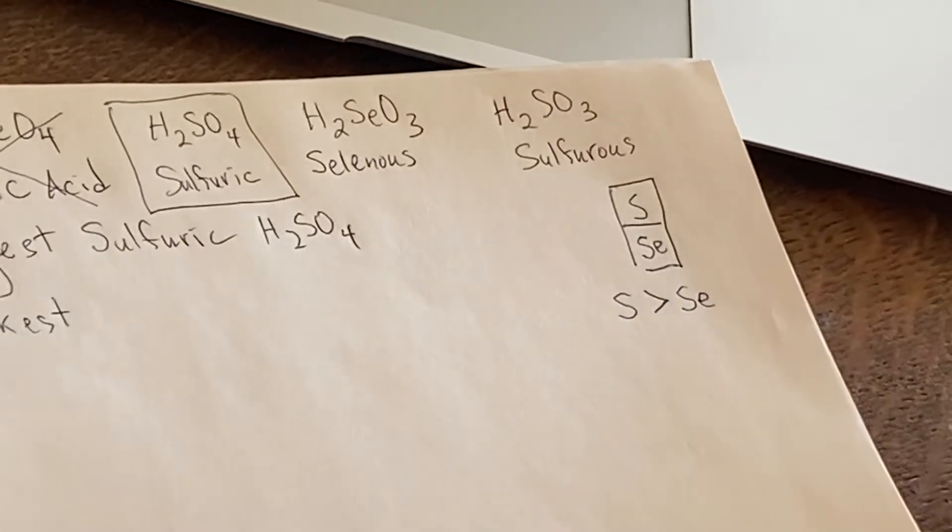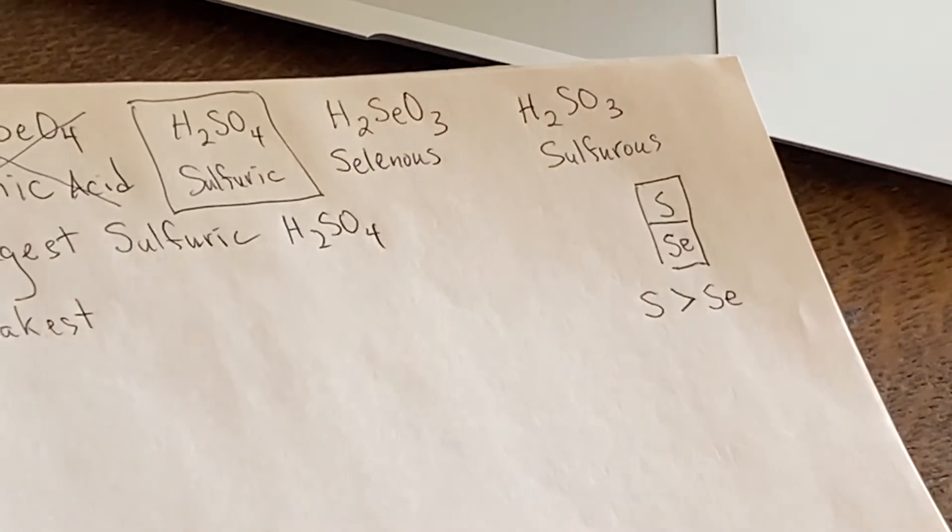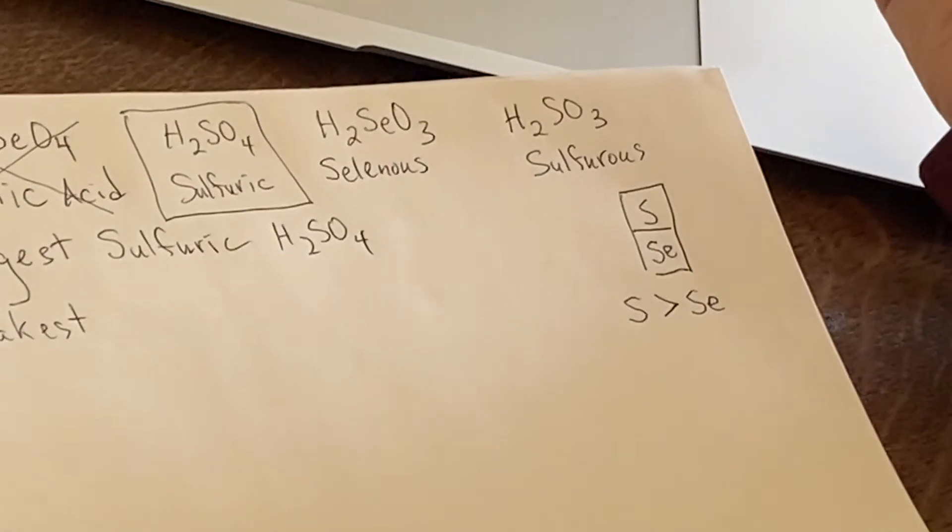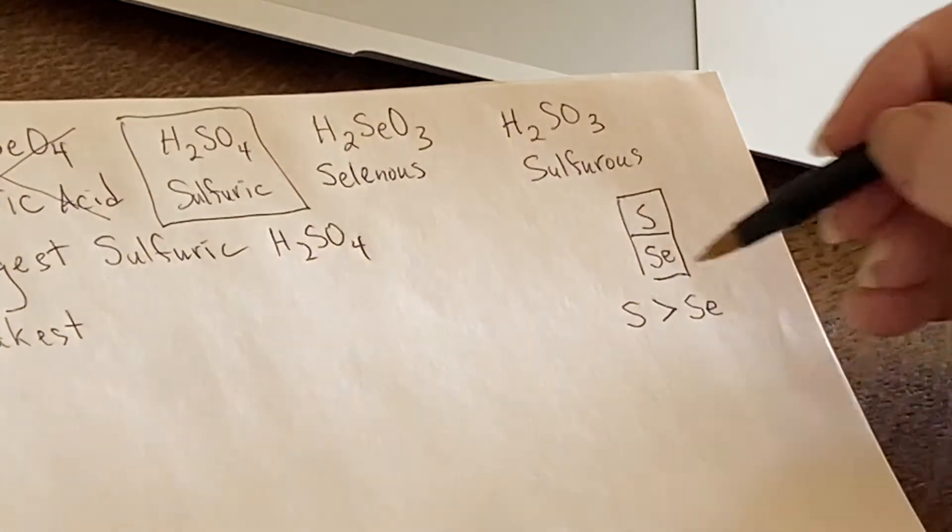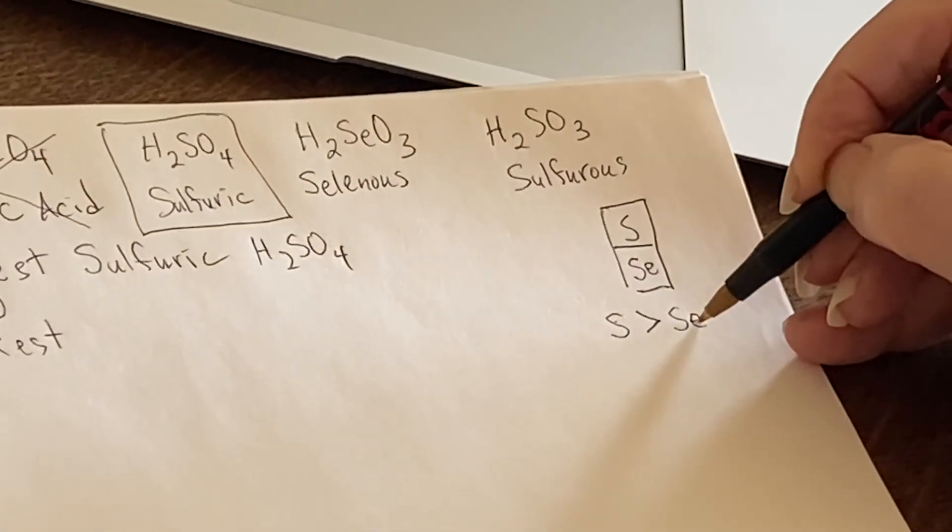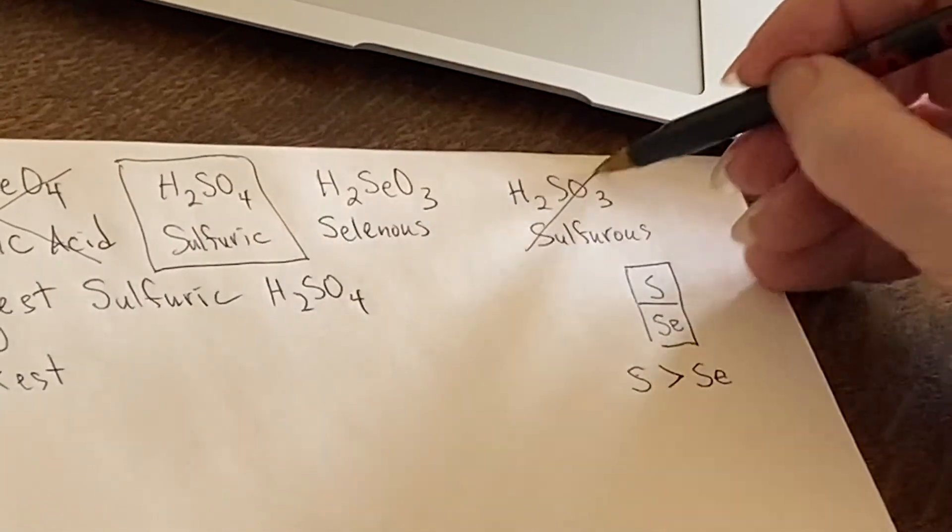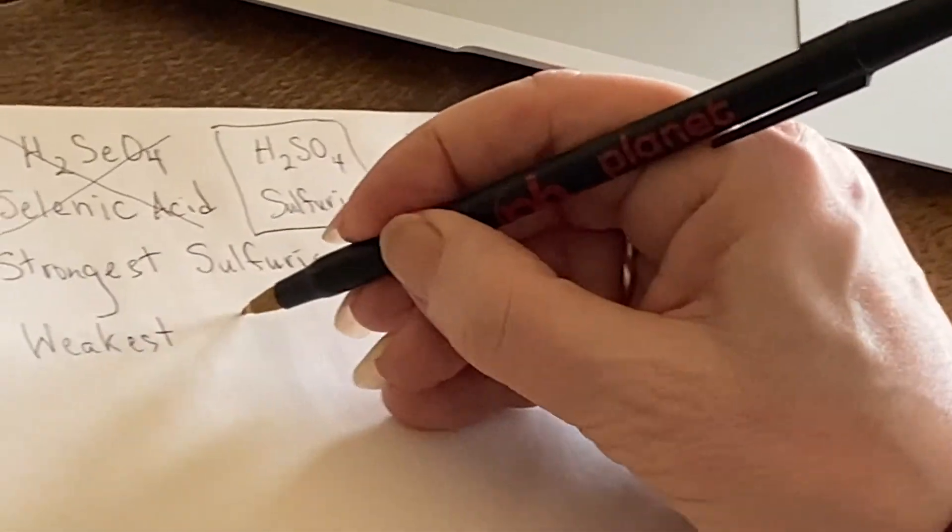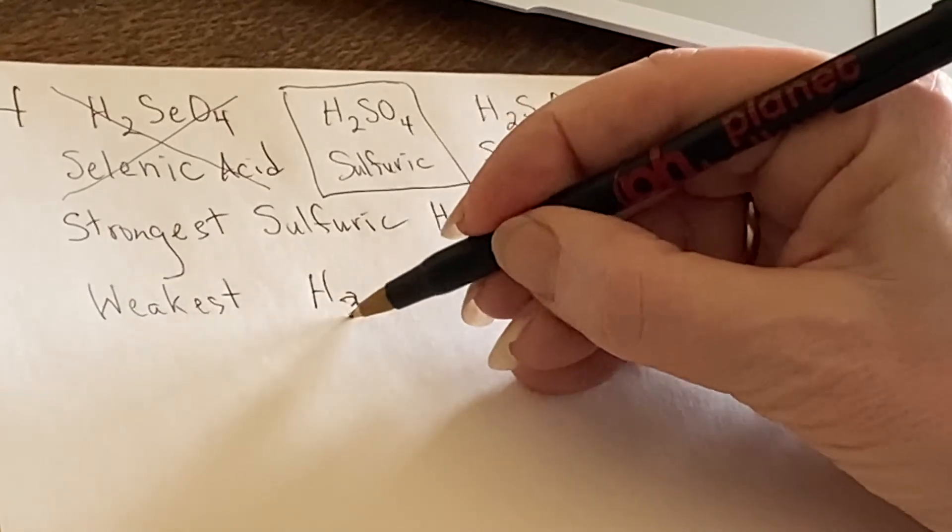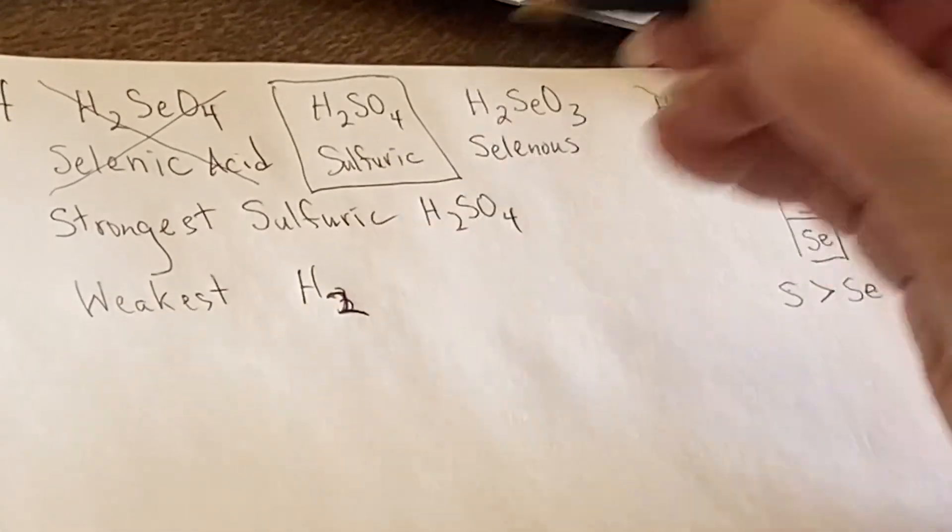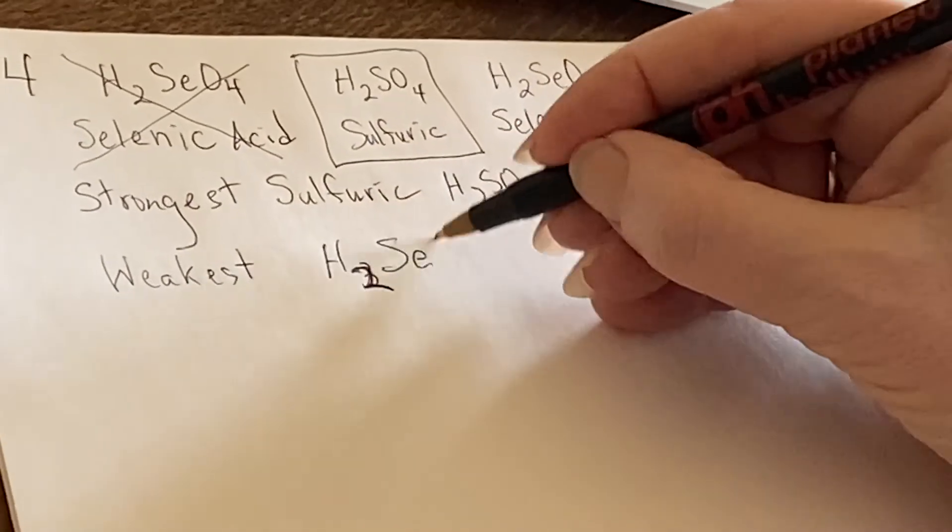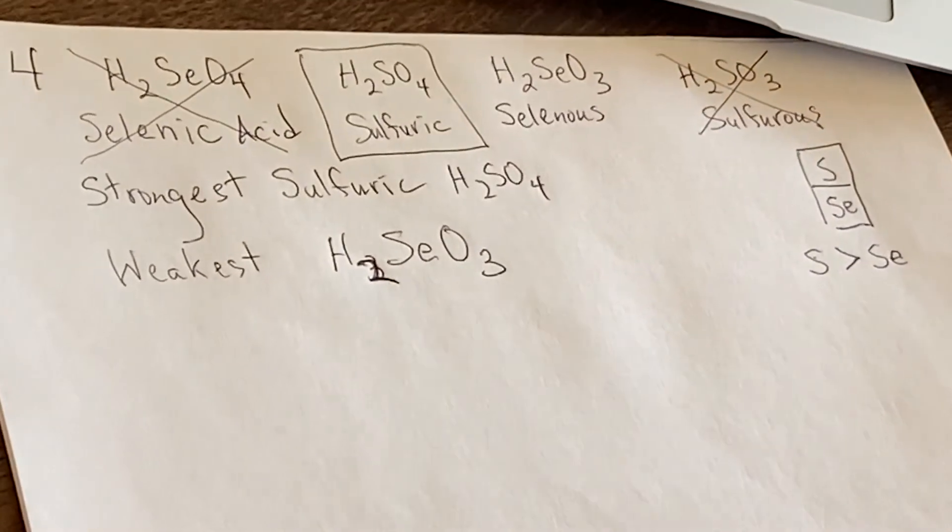And the sulfur is not attached to the hydrogen, so it's pulling electron density away from that hydrogen. So since sulfur is going to be stronger than selenium, I'm going to eliminate this one. And then I can answer that this is going to be the weakest.